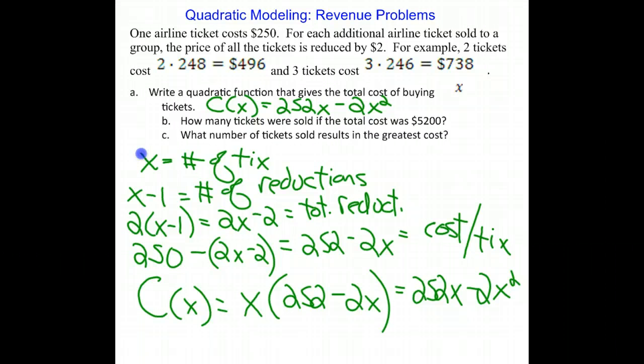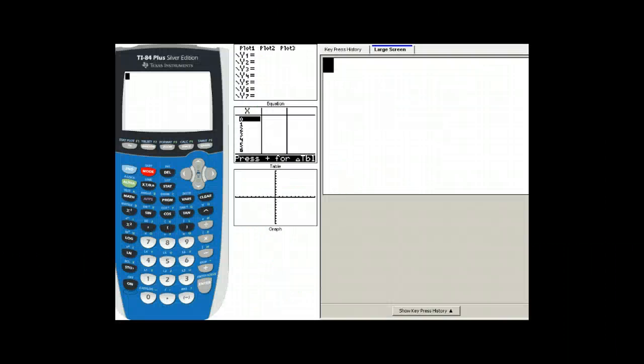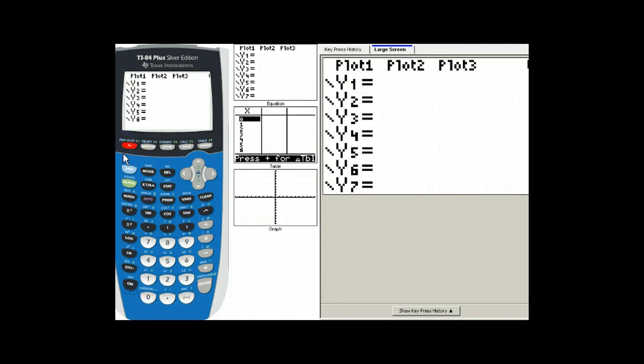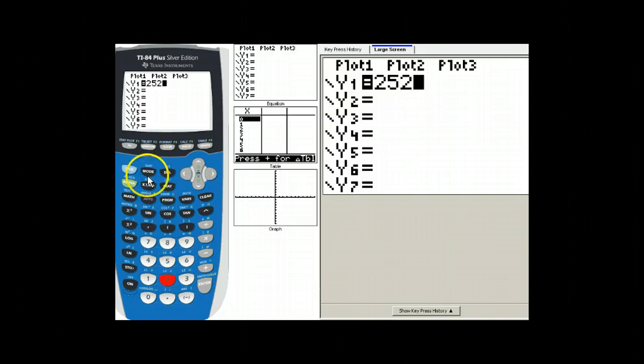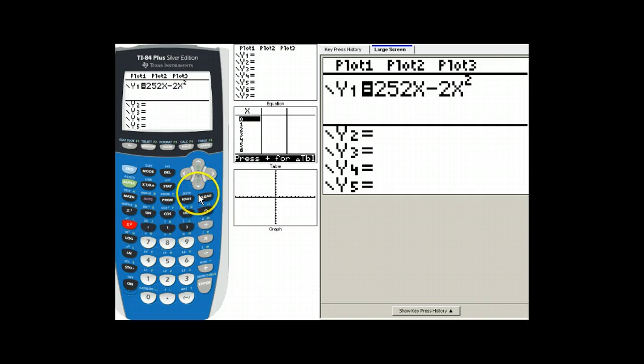In order to answer the next two parts of this problem, I'm going to move over to the calculator. So first I'm going to set up the calculator. I'm going to enter into the function that we discovered earlier that gives the total revenue for X tickets sold.